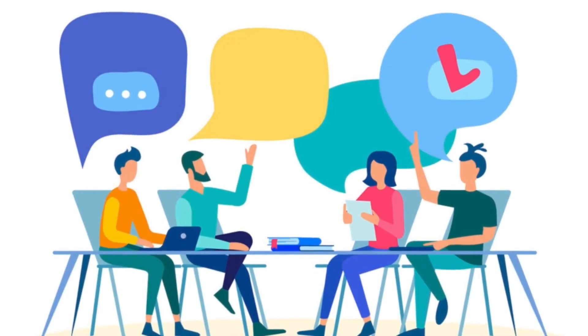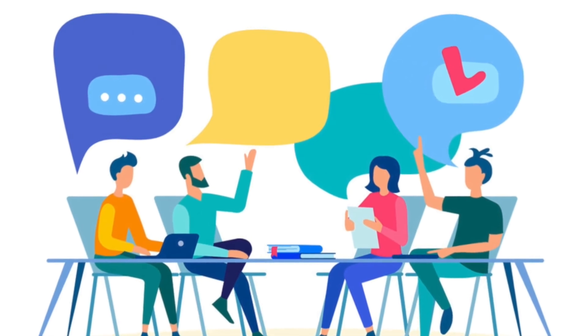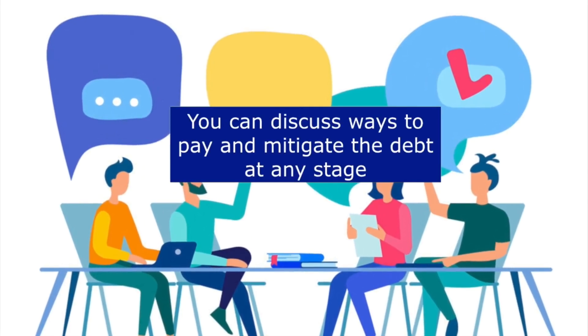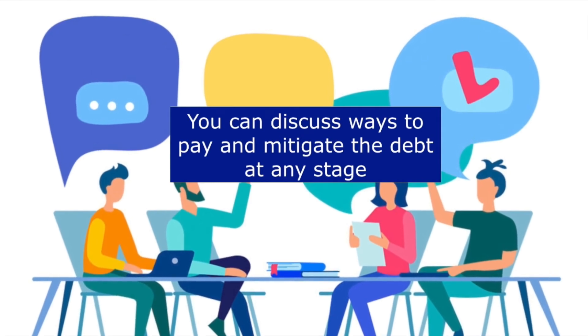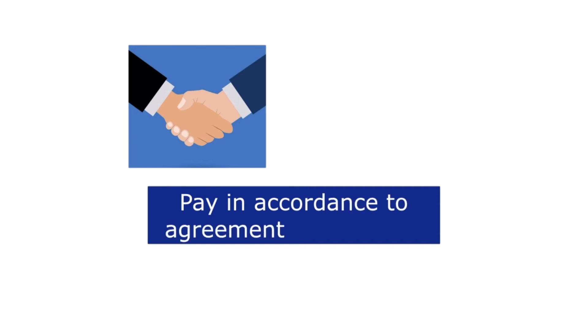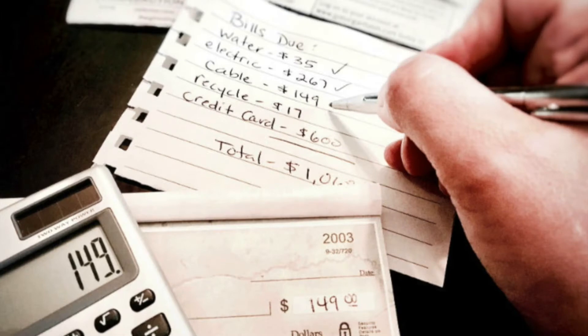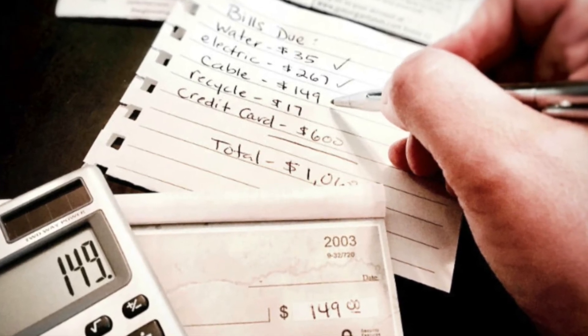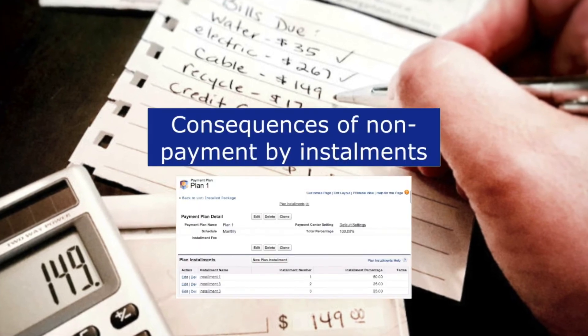The importance of this process is that there are undesirable consequences of non-payment of council tax debt. Before we start discussing the consequences of non-payment, please bear in mind that no matter what stage of the process you're at, you can still discuss ways to pay and mitigate the debt with the council — even if you have received a court summons. As a starting point, you must pay in accordance with how you have agreed with the council. If you fail to do so, the council has no alternative but to issue further reminders and initiate proceedings to get the money owed. As the consequences of not paying the council tax as a lump sum are quite straightforward, we will focus on the consequences of non-payment of instalments.